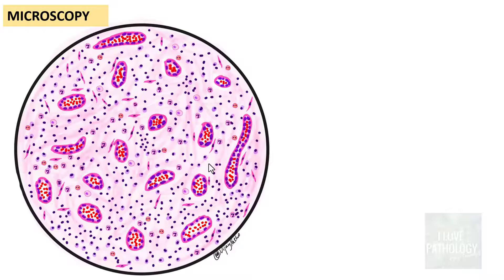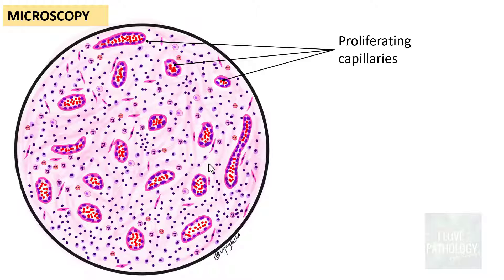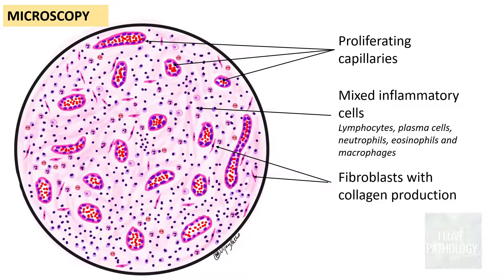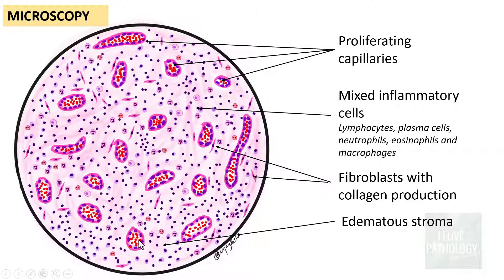Microscopically, this illustrated image shows proliferating capillaries. You can see lots of mixed inflammatory cells — the small dots are the lymphocytes, you have plasma cells, neutrophils, eosinophils, and macrophages as part of the immune response. You find fibroblasts, and that very thin collagen being formed by these fibroblasts. Most of the time, the stroma of the granulation tissue is edematous — that's because the newly formed capillaries are very leaky in nature, which is why you see the edematous stroma.